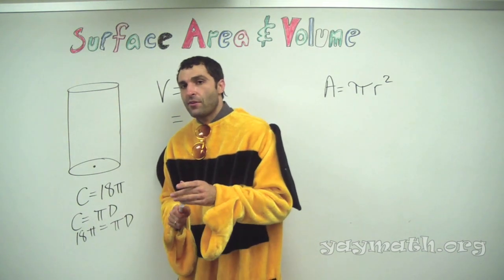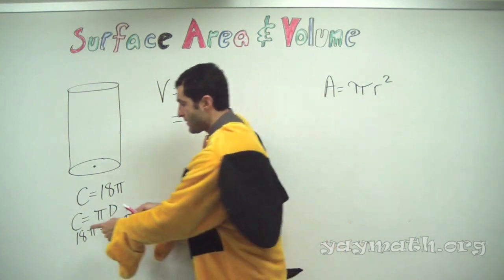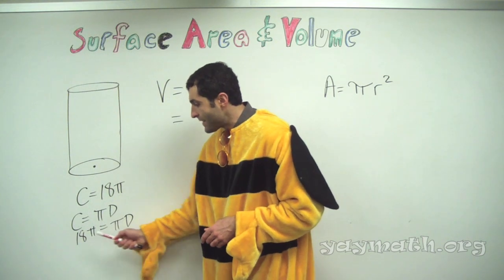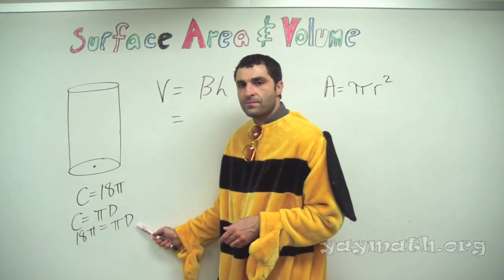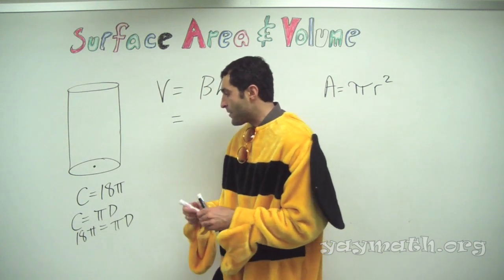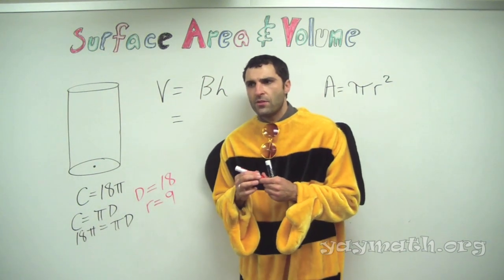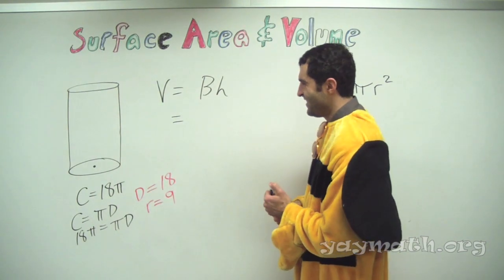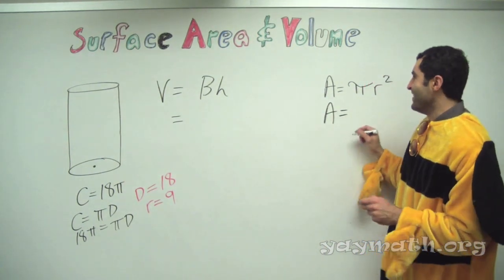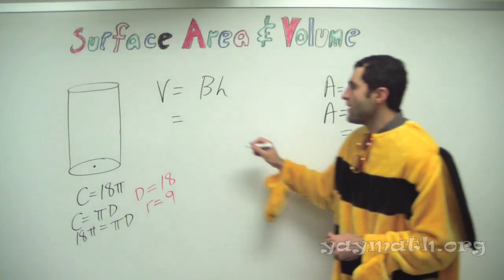If the radius is 9, the area of the base is πr² = 81π. Is that right? Circumference equals 18π, plug that in: 18π = πd, so diameter is 18 and radius is half of that — 9. Therefore area of the base is 9 squared times π, which is 81π.